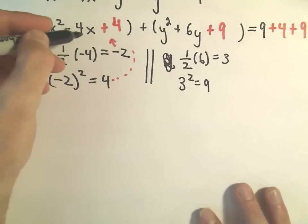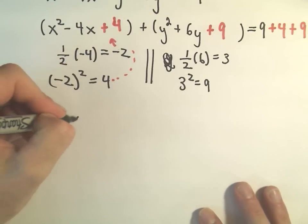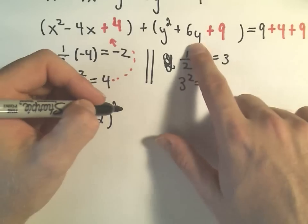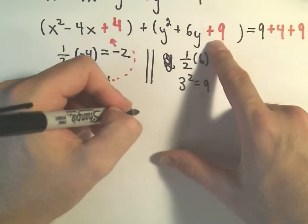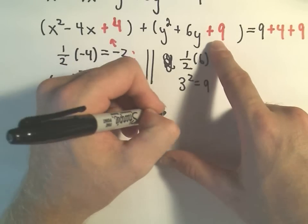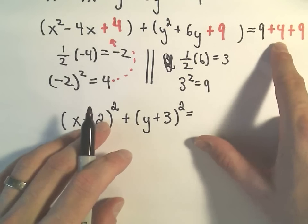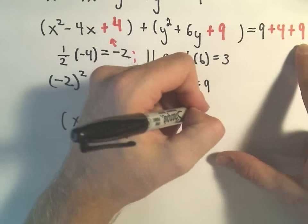And now again, we're almost there. x squared minus 4x plus 4, that factors nicely as x minus 2 squared. y squared plus 6y plus 9, that factors as y plus 3 quantity squared. Let's see, 9 and 4 is 13 plus another 9 is 22.